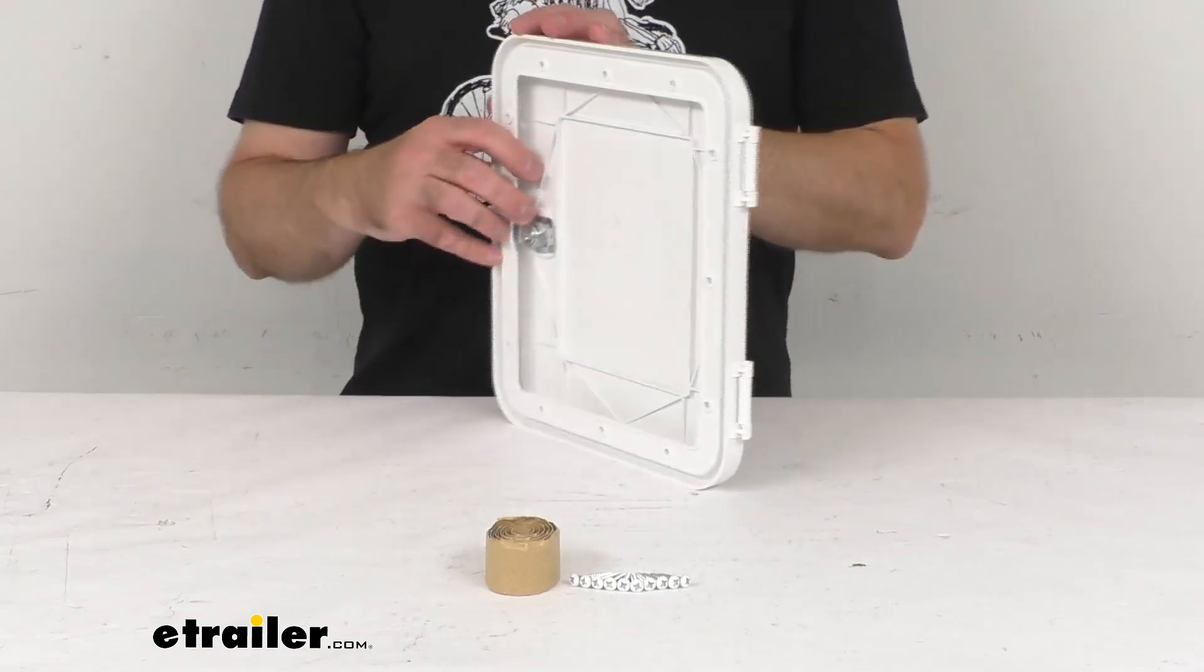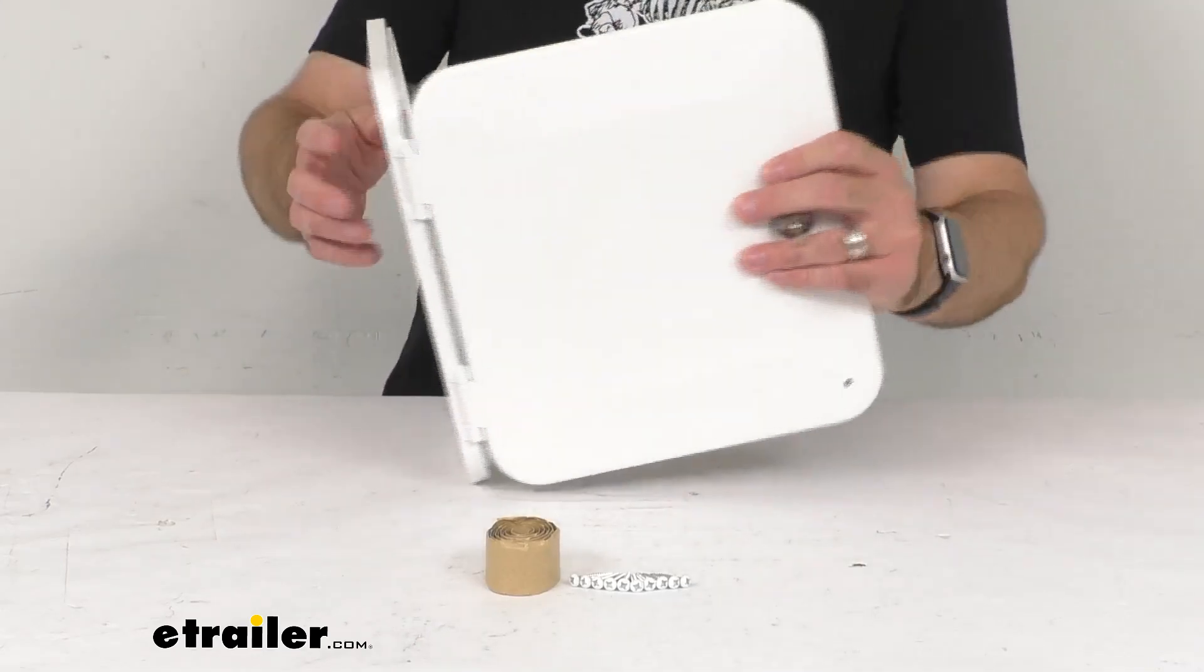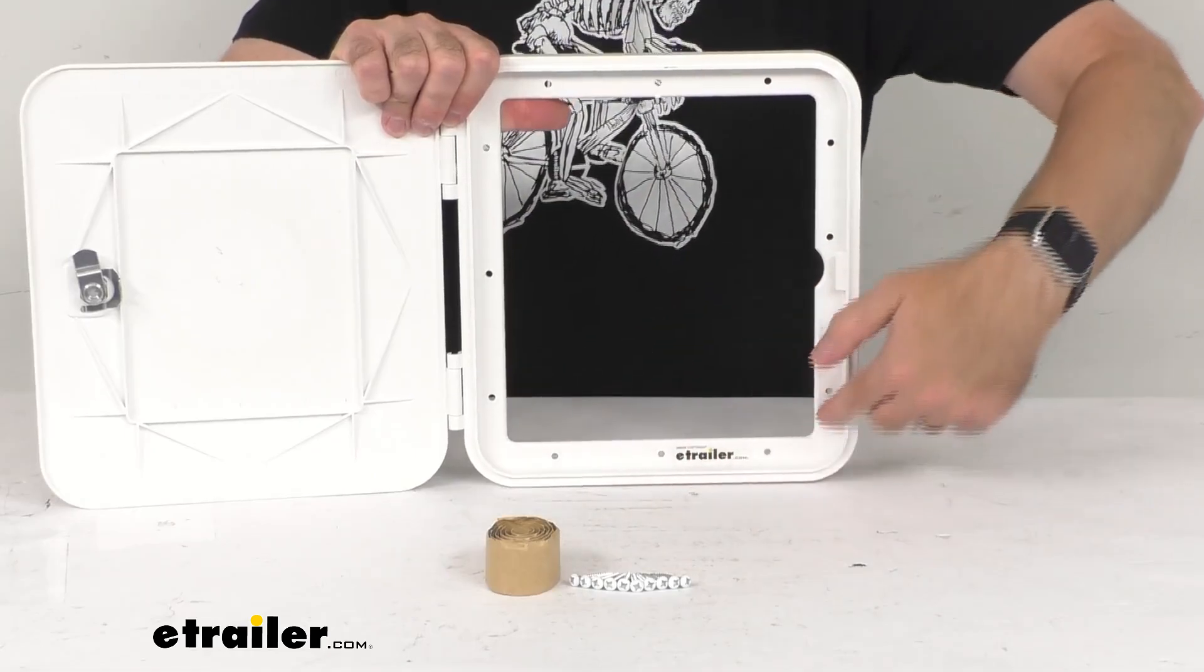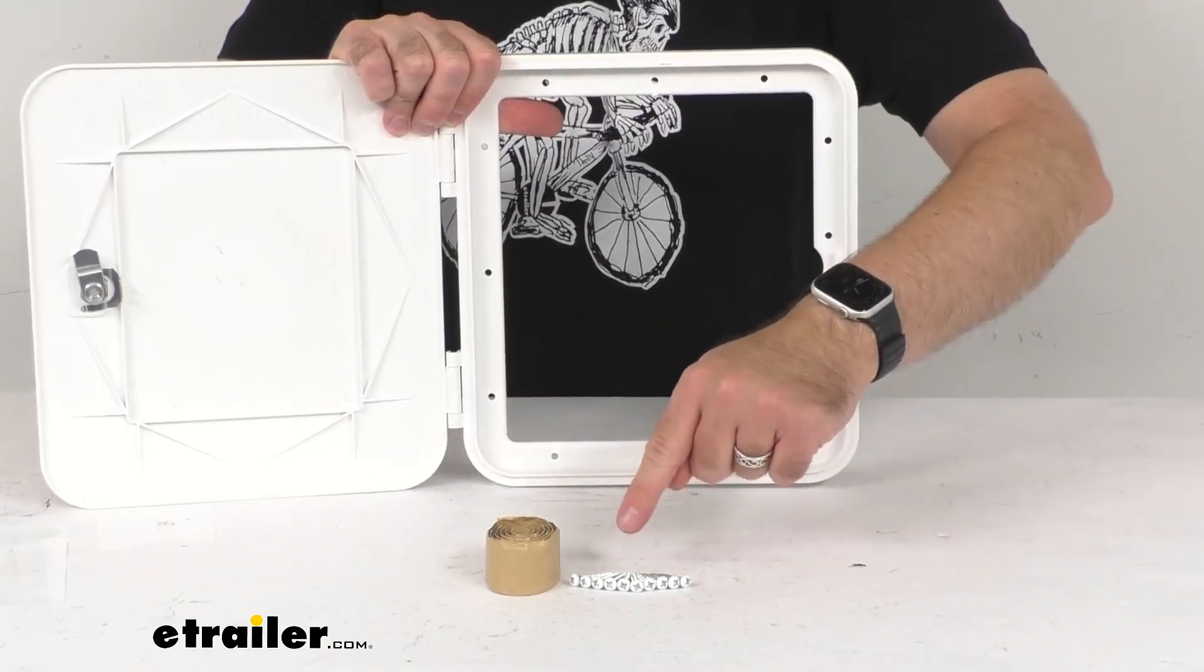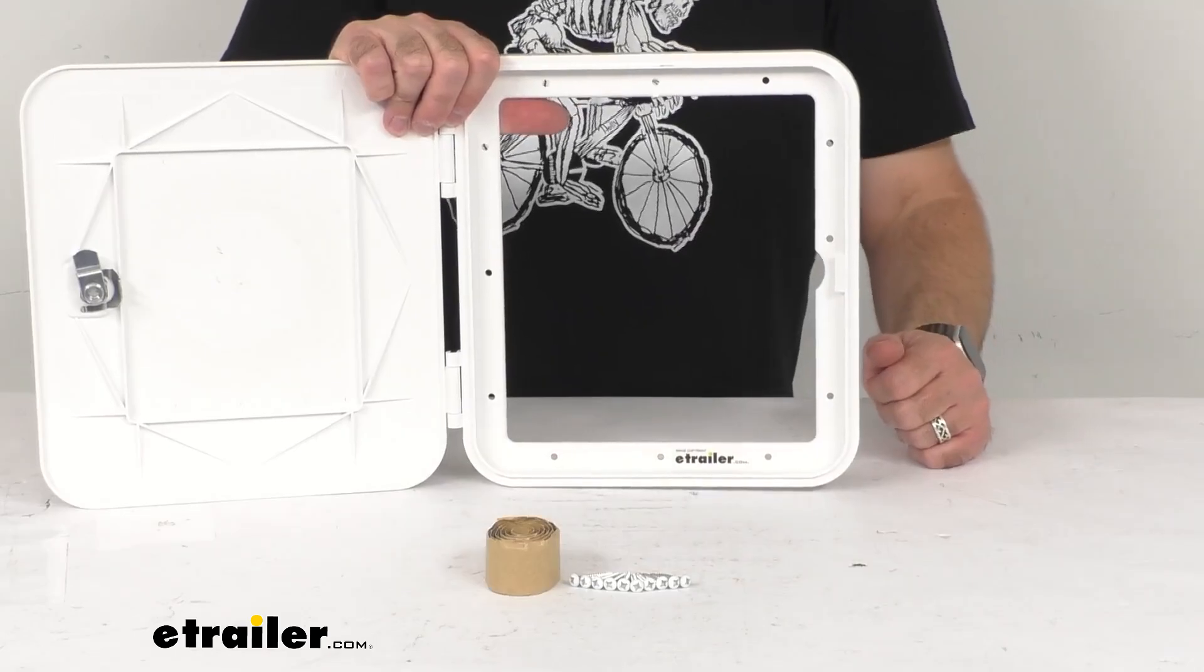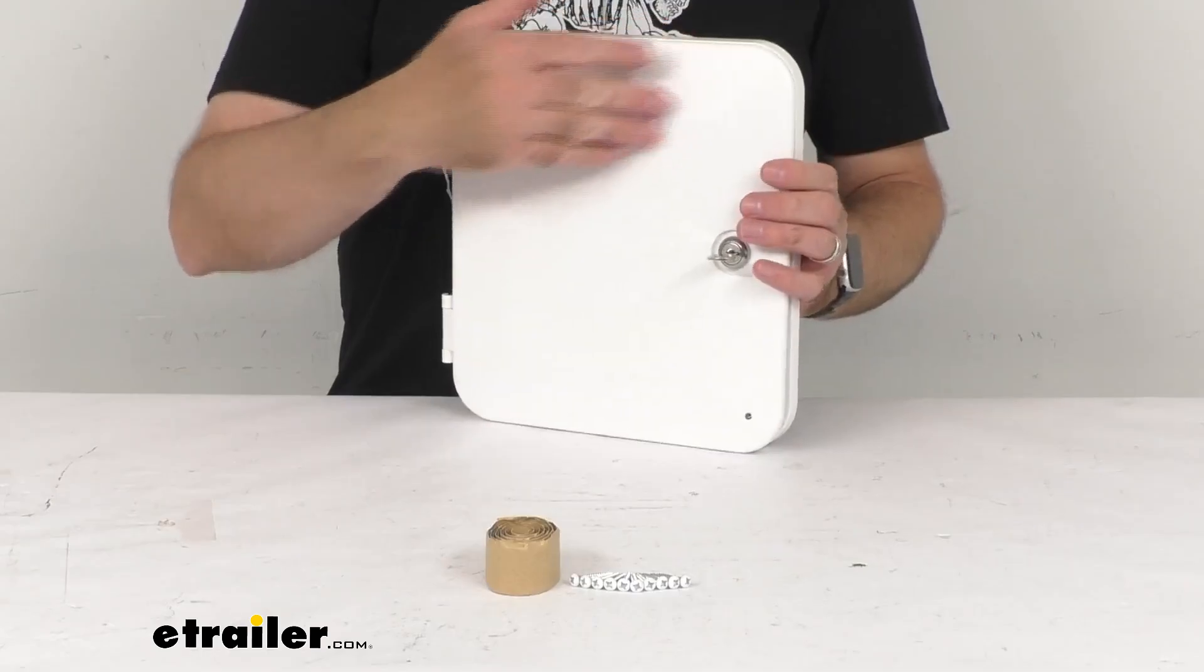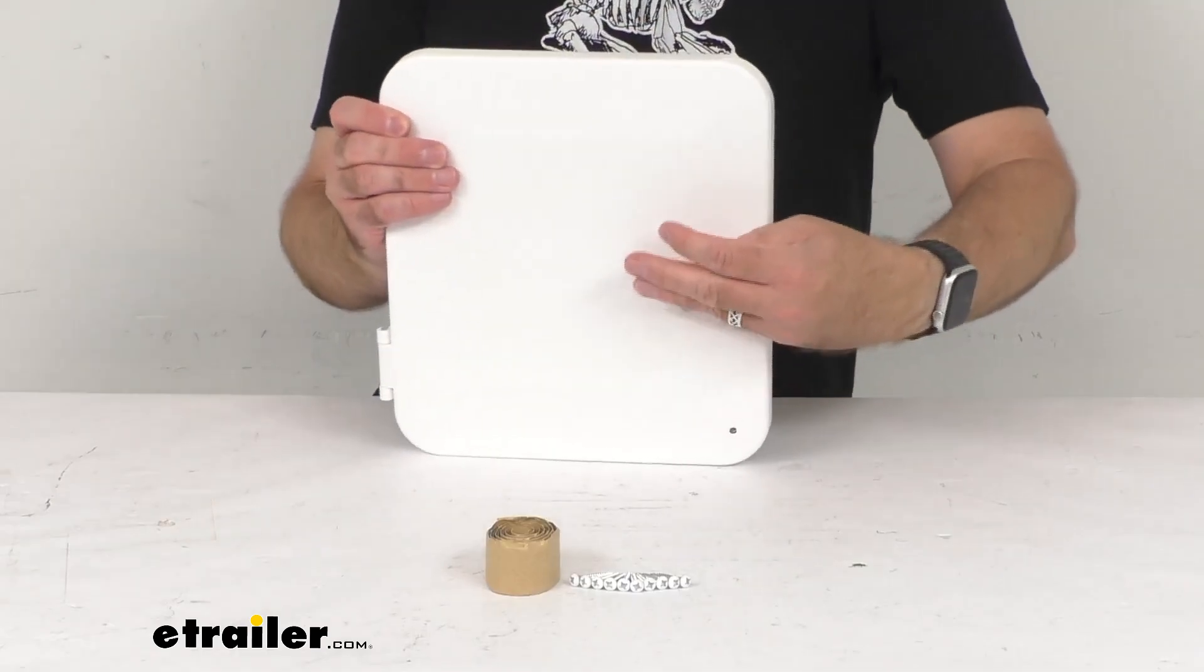Now the hatch flange is going to secure to your exterior wall with the supplied screws. Butyl tape is also included with this, and then of course this is going to lock and it does include a key. So I'm going to go ahead and push this shut and then just lock it.